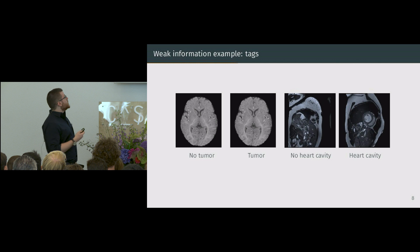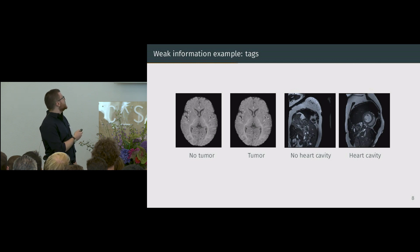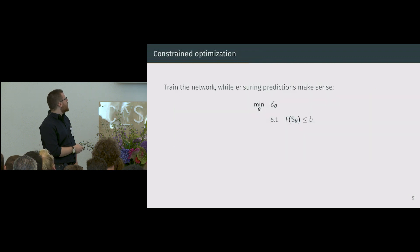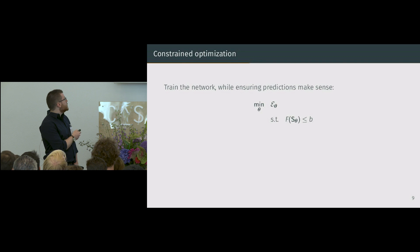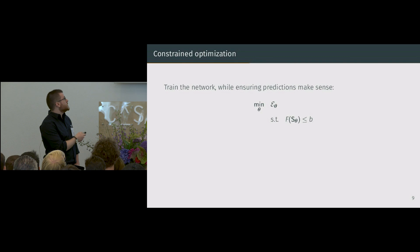We can also use tags directly, for instance from radiology reports. For instance, given an image, you can say there is a certain cavity or there is not. So instead of just training a neural network with supervision only for a few pixels, we will add constraints based on the full image predictions.